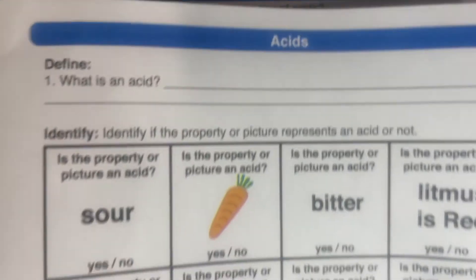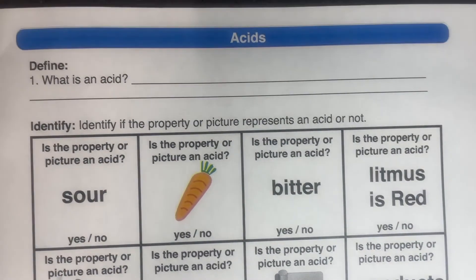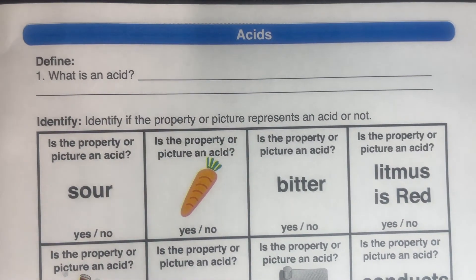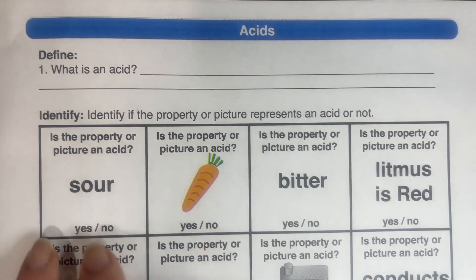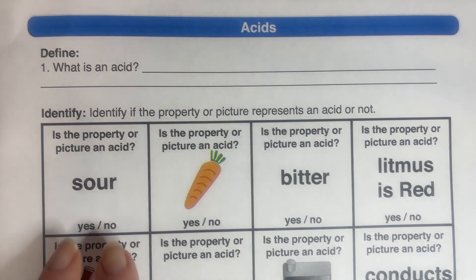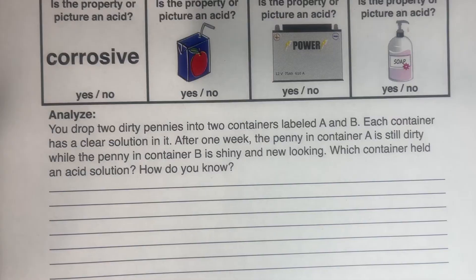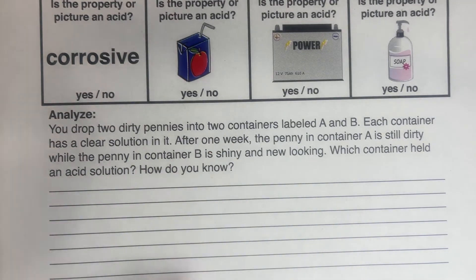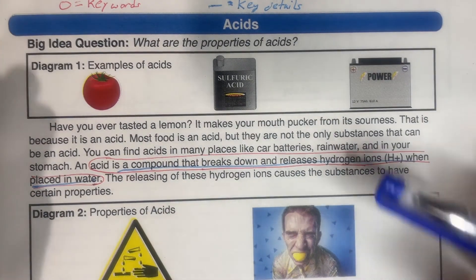Finally, you can have them use that information and apply it in a comprehension worksheet to see if they really understood the reading. They're going to be looking at different pictures to decide if it's an acid or a base based on their knowledge of what they just read about acids. They're writing the definition and then analyzing information to figure out which solution is an acid, again based on their reading.